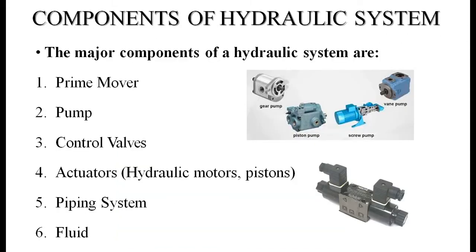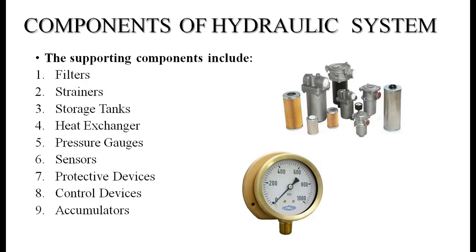The major components of a hydraulic system are: prime mover, pump, control valves, actuators (hydraulic motors or pistons), piping system, and working fluid — which in hydraulic systems is an incompressible liquid. Supporting components include filters, strainers, storage tanks, heat exchangers, pressure gauges, sensors, protective devices, control devices, and accumulators.